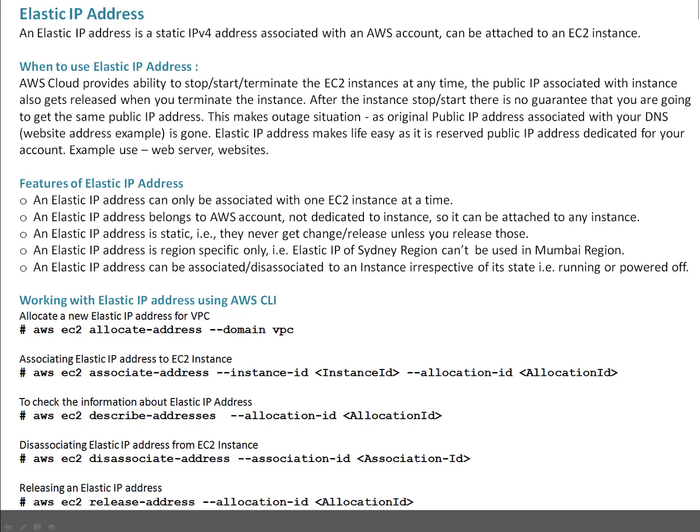An elastic IP address is a static IPv4 address associated with an AWS account. It can be attached to an EC2 instance. When to use elastic IP address?